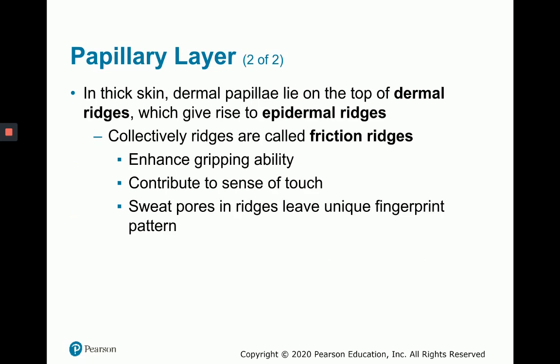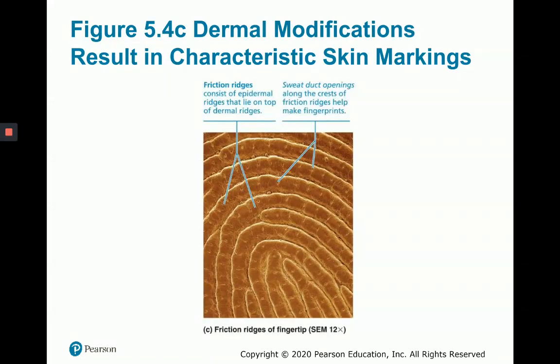In thick skin, the dermal papillae lie on top of dermal ridges, creating ridges in the epidermis known as friction ridges — your fingerprints and toe prints — which enhance gripping ability and sense of touch. Sweat pores in the ridges leave a unique fingerprint pattern for each individual. In this image you can see the friction ridges created by thick dermal papillae causing ridges in the epidermis, with tiny sweat duct openings at the tops of the epidermal ridges.